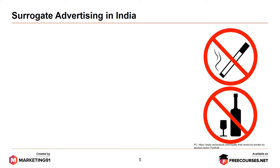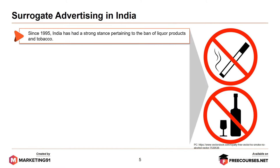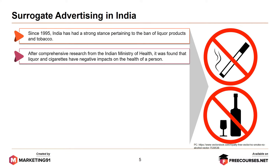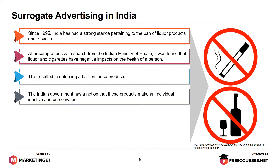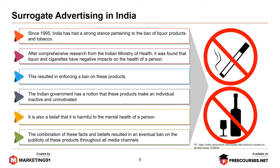Moving on to surrogate advertising in India: since 1995, India has had a strong stance pertaining to the ban of liquor products and tobacco. After comprehensive research from the Indian Ministry of Health, it was found that liquor and cigarettes have a negative impact on the health of a person. This resulted in enforcing a ban on these products. The Indian government believes these products make an individual inactive and unmotivated, and that they are harmful to mental health. The combination of these facts and beliefs resulted in an eventual ban on the publicity of these products throughout all media channels.